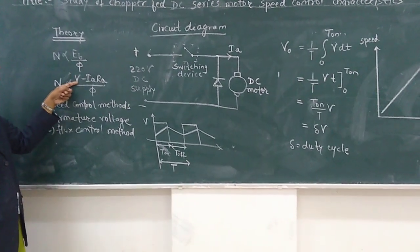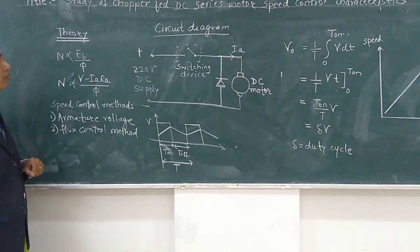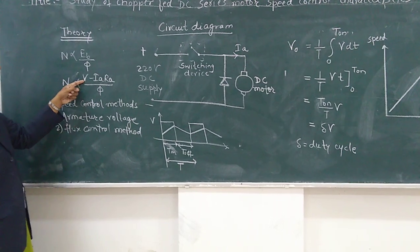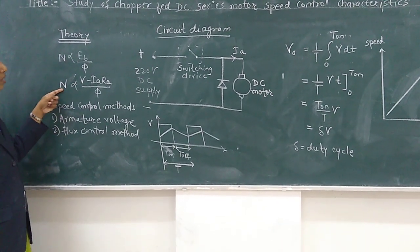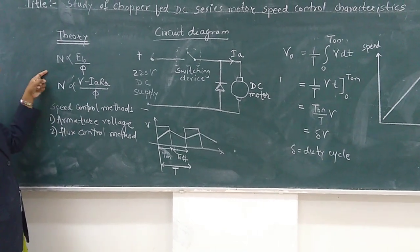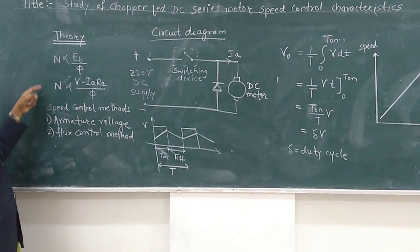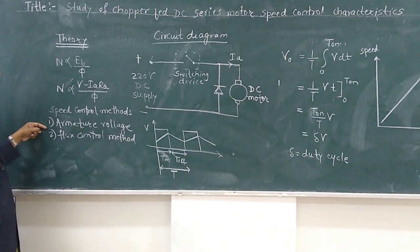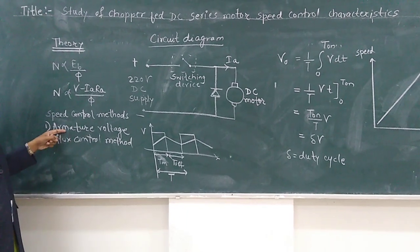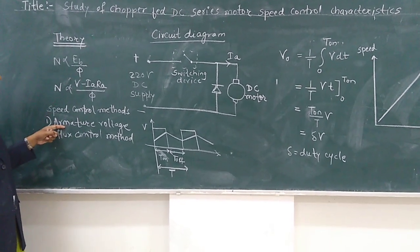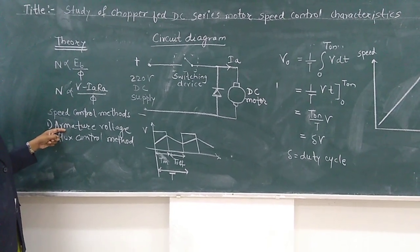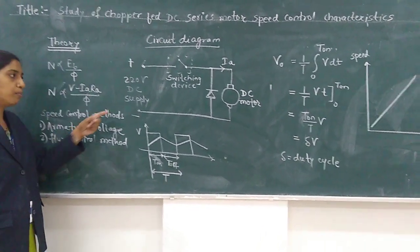This back EMF can be expressed in terms of V and Ia*Ra, where V is the supply voltage of the motor and Ia*Ra is the armature voltage drop. So by varying this supply voltage, we are varying the speed of the motor. By decreasing flux, we can also increase the speed of the motor. So we are going to use speed control methods. First one is armature voltage control. Today we are going to perform this method in which we are going to vary the armature voltage. For this purpose we are using chopper.